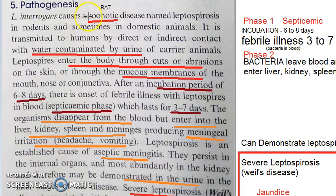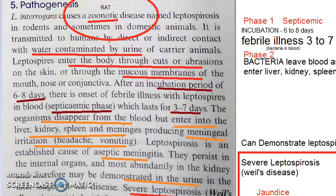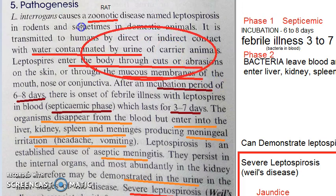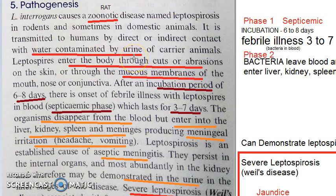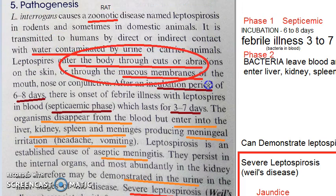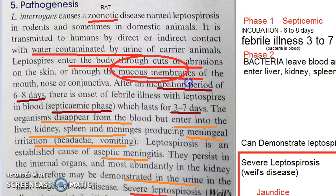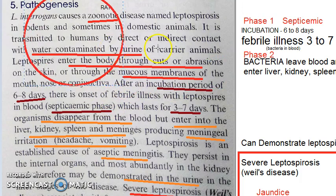This pathogenesis is very important for leptospirosis from an exam point of view. It is a zoonotic disease transmitted by rats. If you come in contact with water contaminated by the urine of rats or domestic animals, the leptospira can enter the body through cuts or abrasions, even through the mucous membrane.